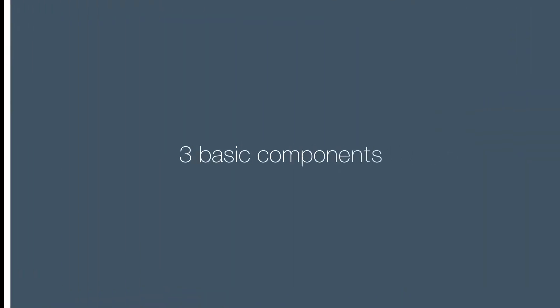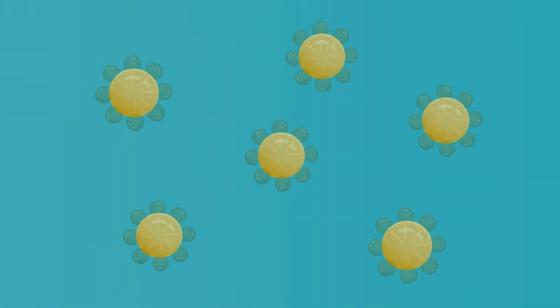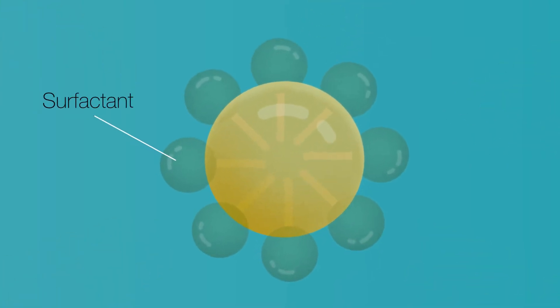A stable emulsion has three basic components. One is the continuous or external phase. This is the phase in which everything else is suspended. The second component is the dispersed phase, or the internal phase. This is the component that you are suspending in the continuous phase. Finally, the third component is the emulsifier, or surfactant. This creates a layer around the dispersed phase and separates it from the continuous phase.